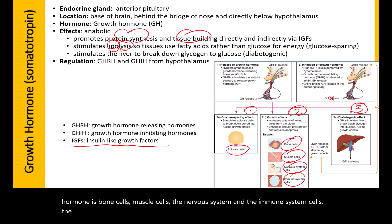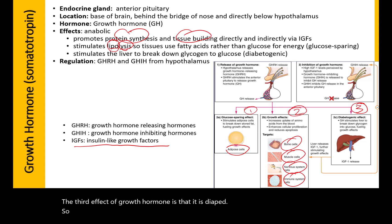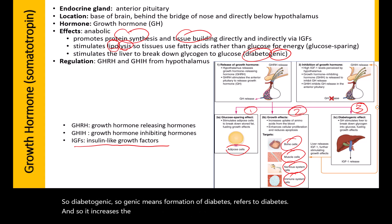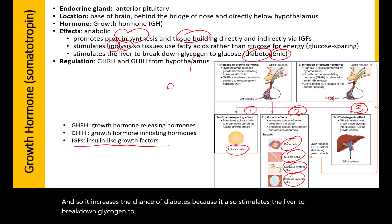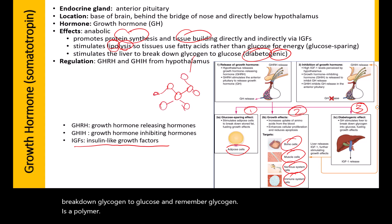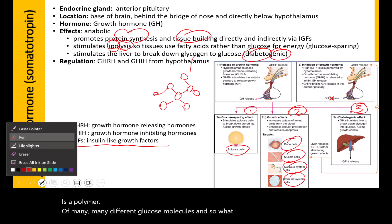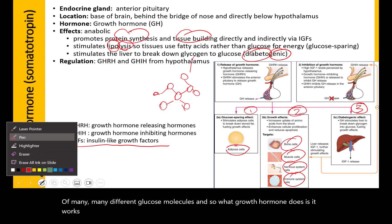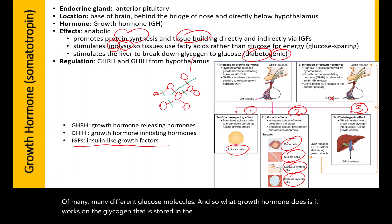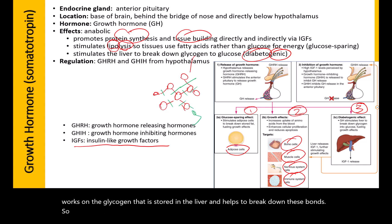The third effect of growth hormone is that it is diabetogenic — genic means formation of, diabeto refers to diabetes. It increases the chance of diabetes because it stimulates the liver to break down glycogen to glucose. Glycogen is a polymer of many glucose molecules, and growth hormone breaks down these bonds so that glucose monomers are released to be used for energy.